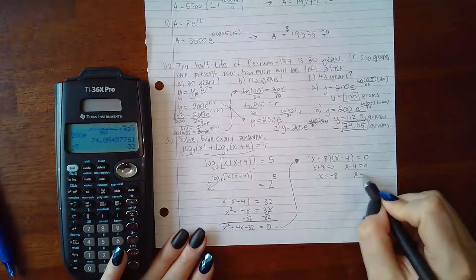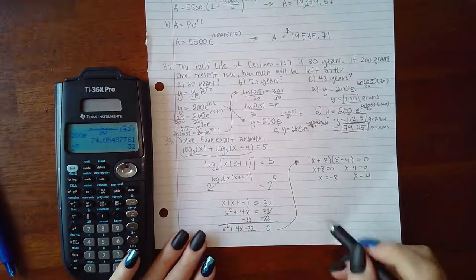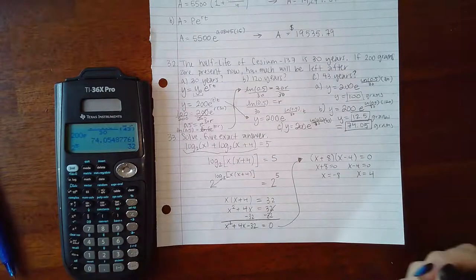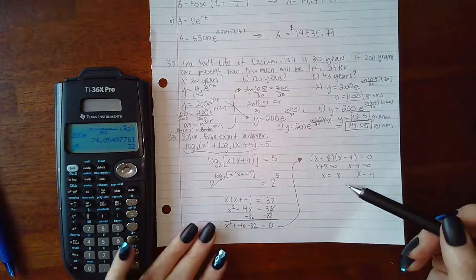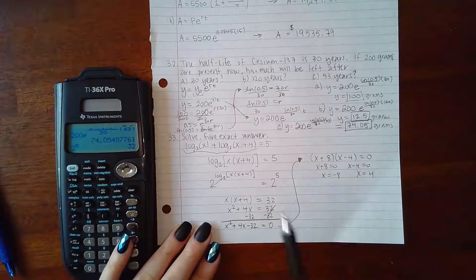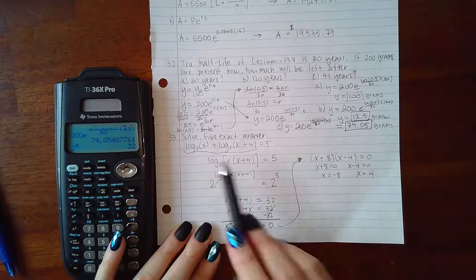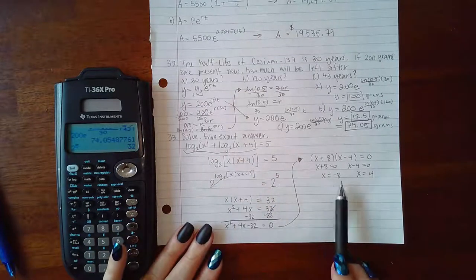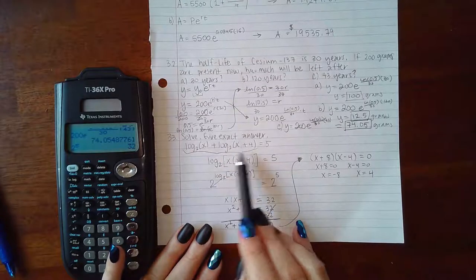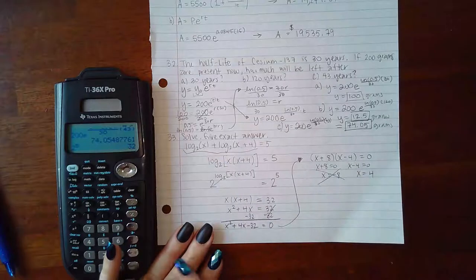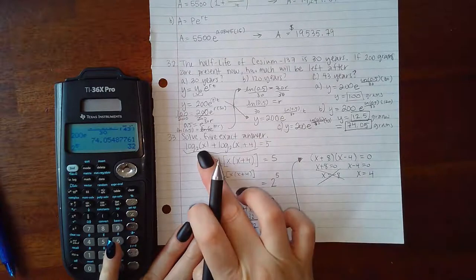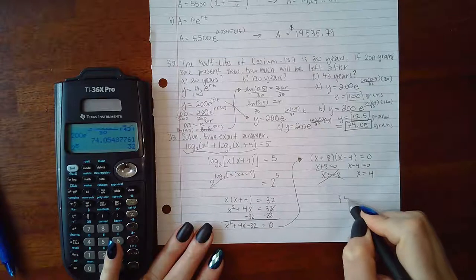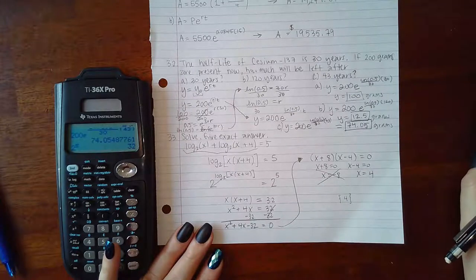If I set each factor equal to 0, I will get x = -8 and x = 4. Now what I have to do is make sure that I don't have an extraneous solution. An extraneous solution is when we solve everything, all the algebra is correct, but the answer doesn't check out. Remember, for logarithms, your base and your arguments cannot be negative. My bases are 2 and those will never be negative, so I don't have to worry about checking that. But when I plug x into here or here, I will end up with a negative argument, which means that -8 cannot possibly be a solution. If I plug in 4 here and here, I end up with positive arguments, which means 4 is the only solution. So 4 will be the only value that I include in my solution set.